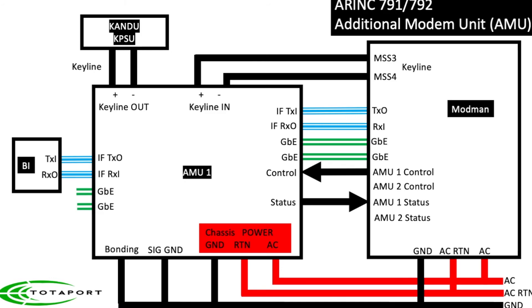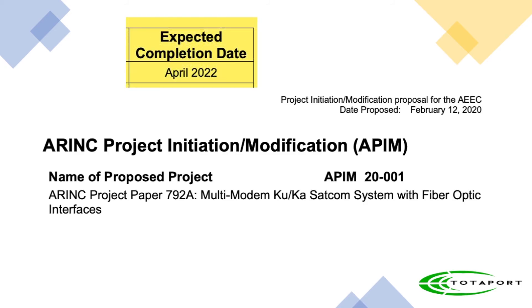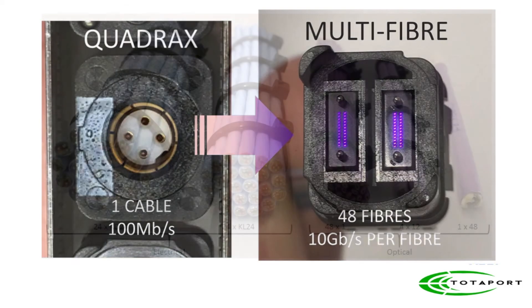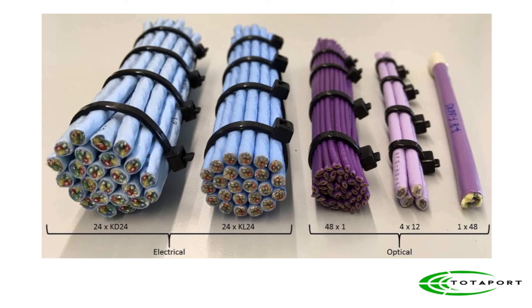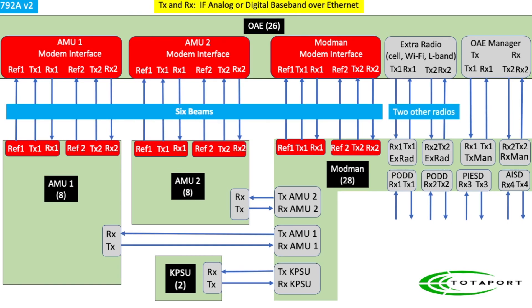Coaxial wiring starts to run out when you have all of these different beams, so we've started to look at fiber optics. A new project, 792A, is initiated with expected completion in April 2022. In the same space where we can connect one Ethernet pair, we can move 24 over fiber, each at 100 times the data rate. Fiber cable is a fraction of the size and weight of star-quad or coaxial cables. The 792A starting architecture uses 26 fiber optic strands to the OAE, supporting six beams and potentially co-locating L-band safety services under one assembly.